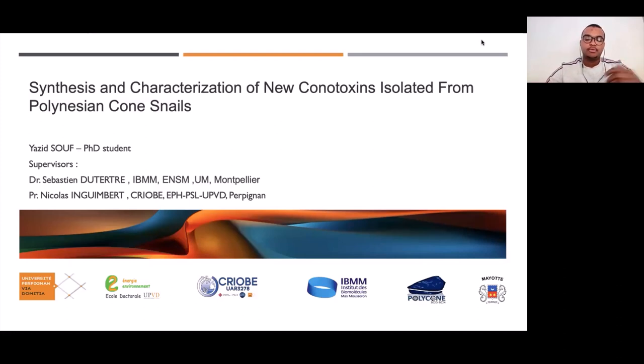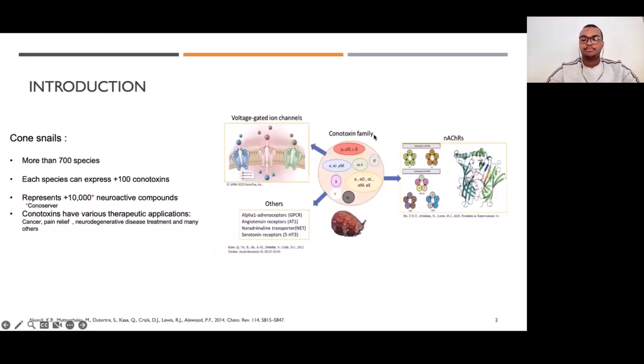First of all, I would like to introduce cone snails. Cone snails are marine venomous animals that during their evolution developed a highly potent venom to capture prey or to defend themselves against predators. These venoms are made of hundreds of small peptides called conotoxins. These conotoxins are very diverse and can target a large range of pharmacological receptors like nicotinic acetylcholine receptors, voltage-gated ion channels, or other receptors included in biological processes.